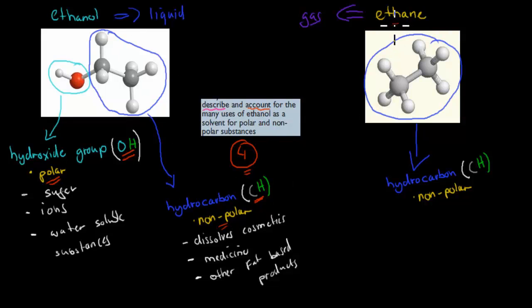The hydroxide group is polar, and the hydrocarbon group is non-polar. Compare that to ethane, which only has a non-polar end. Because we have both a polar and a non-polar end, we can dissolve things which are both polar and non-polar. Polar things like sugar or ions or anything else that is water-soluble. It dissolves these things because they are polar and it has a polar end. It also dissolves non-polar things, such as many of our cosmetics, some medicines, and other fat-based. The fat-based are non-polar. All these things are dissolved because it also has a non-polar end.